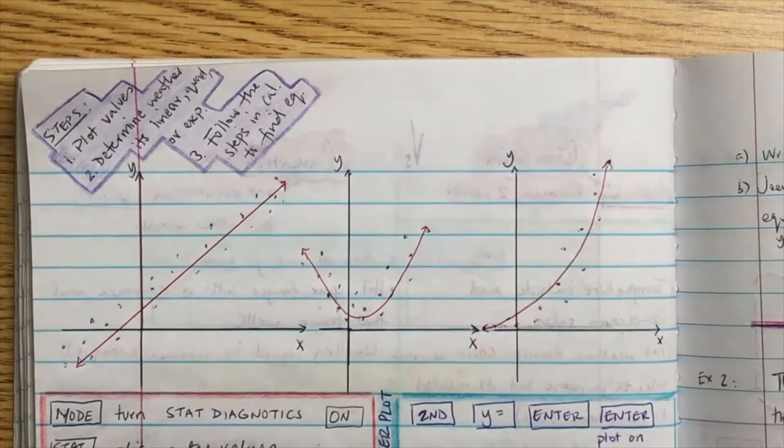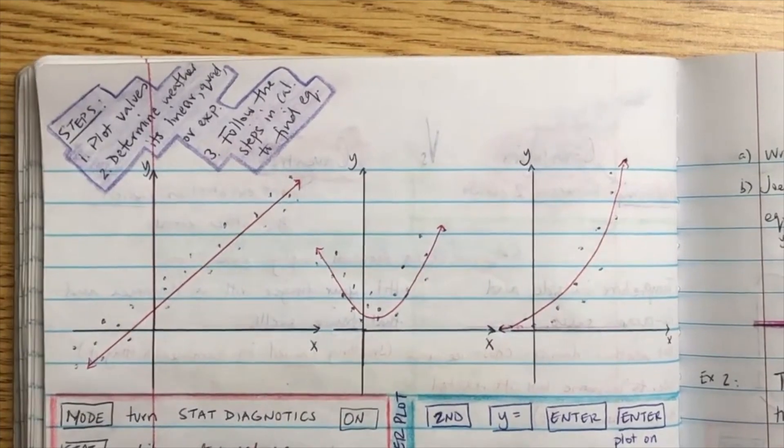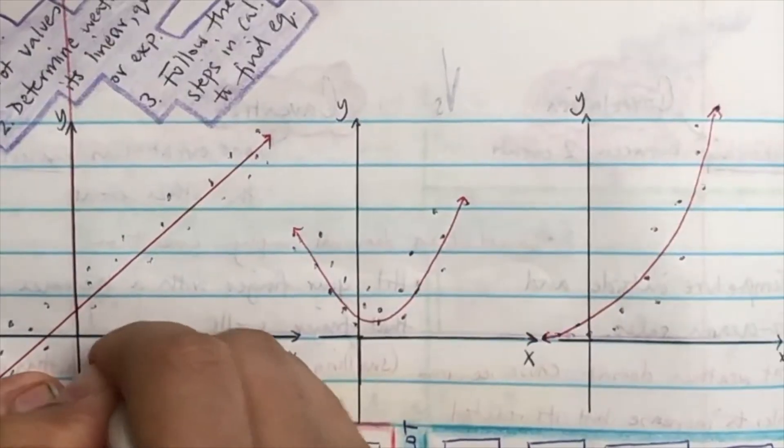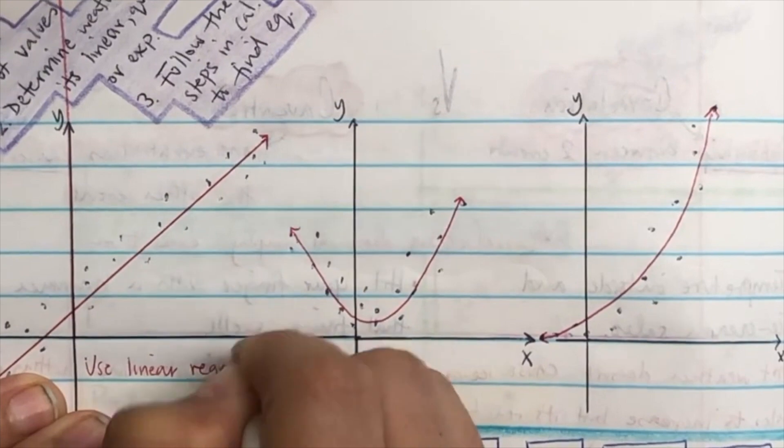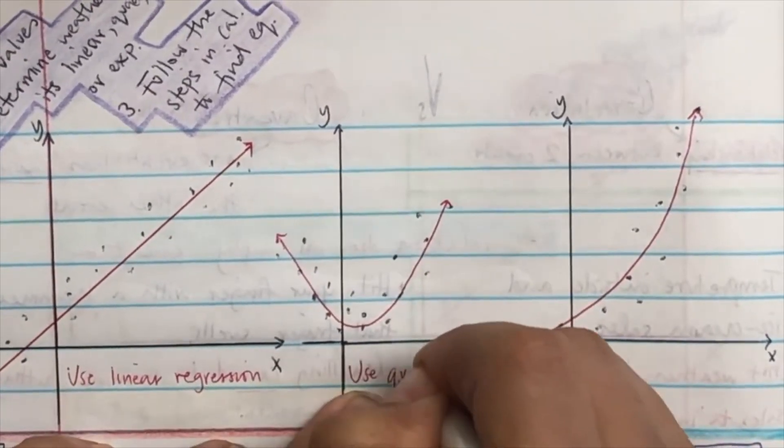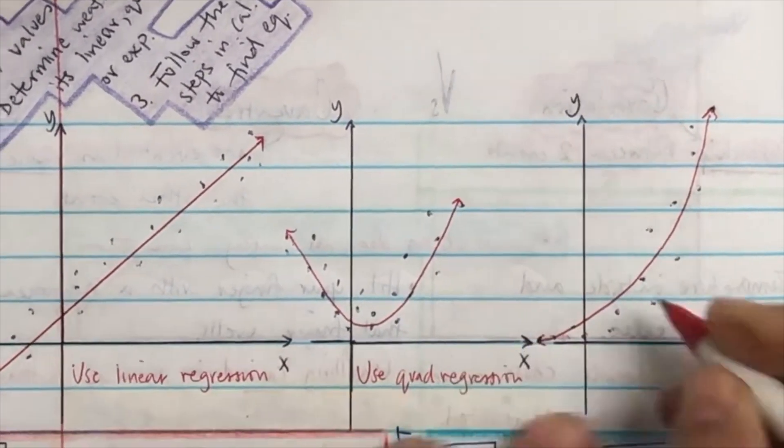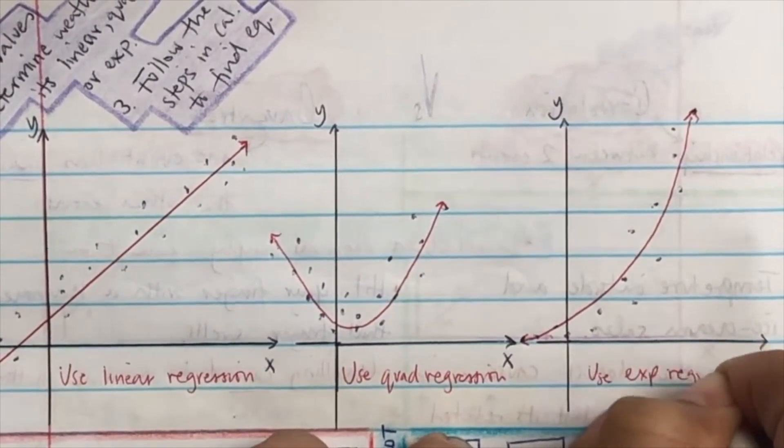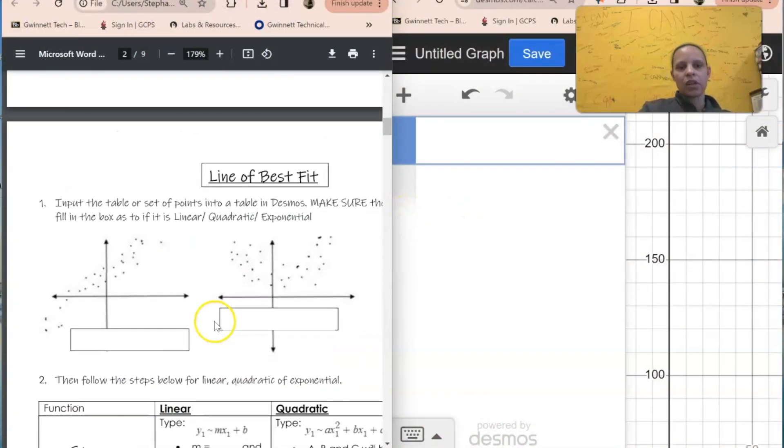So you can kind of tell by the scatter plots what they are. If you get a linear equation, you're going to use linear regression. And we've done that before. If you get a quadratic, you're going to use quadratic regression, and if you get an exponential, you'll use exponential. All right, so we're going to do a line of best fit.